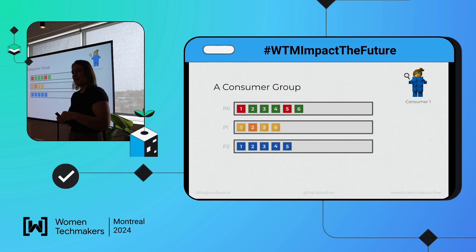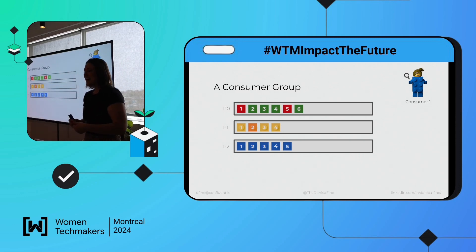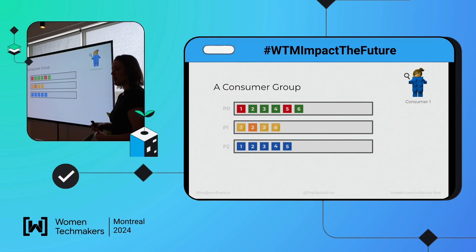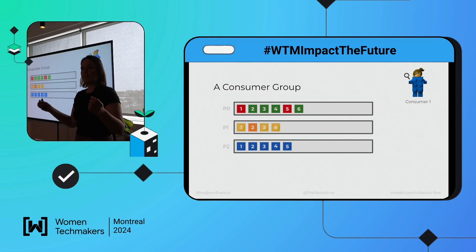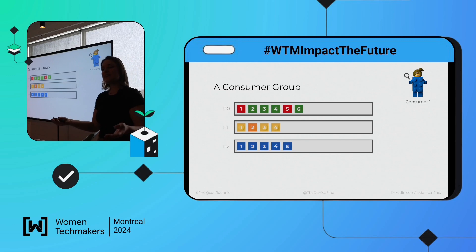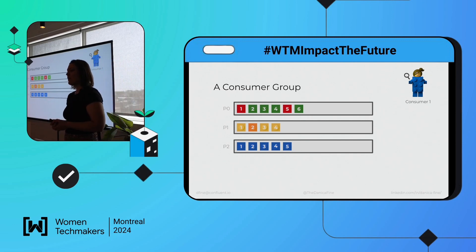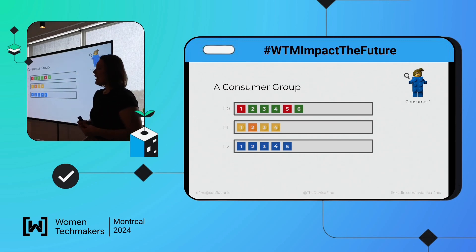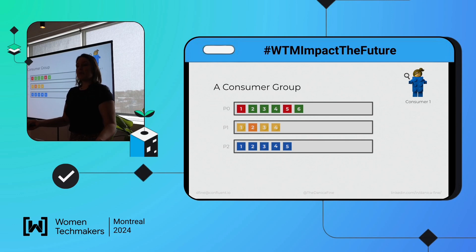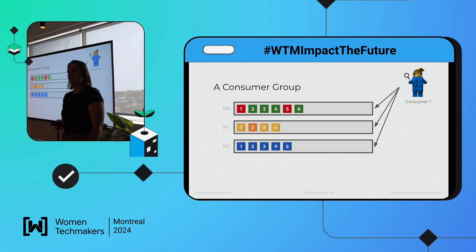But what if you want consumers to be coupled? We can bring consumers together as part of a consumer group to parallelize the processing of data from a single Kafka topic based on partitions. You give all consumers the same consumer group ID, and when they start up they share the work — they receive a partition assignment from the consumer group coordinator on the broker. If only consumer one is operating on a three-partition topic, it's assigned all three partitions.